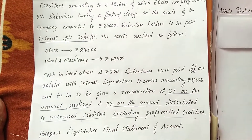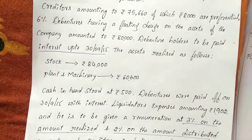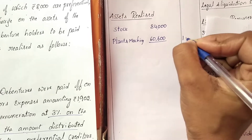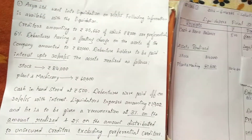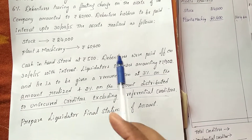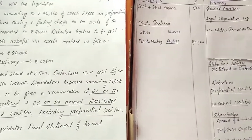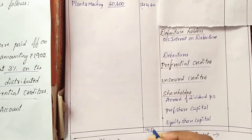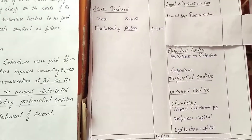Next, asset realized: stock is 84,000 and plant and machinery is 60,600. So total assets realized: stock 84,000 plus plant and machinery 60,600 equals 1,44,600. No information on surplus from secured creditors or calls received. Total receipts: 500 plus 1,44,600 equals rupees 1,45,100.